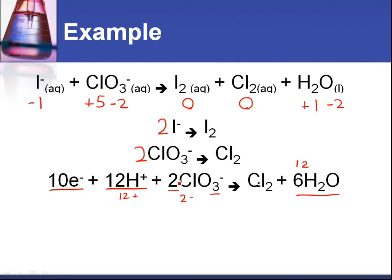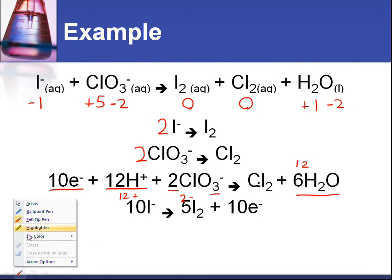Next we're going to look at the iodine half equation. We have to make sure that the number of electrons is the same. In the first half equation we have 10 electrons. That means we have to multiply everything in this equation here by 5.